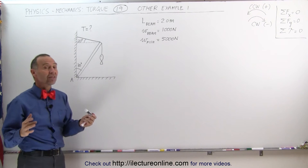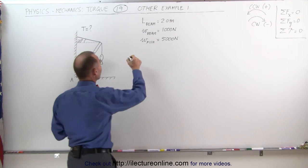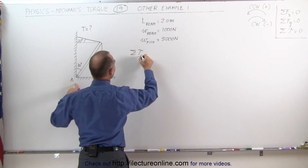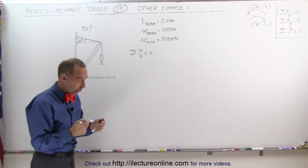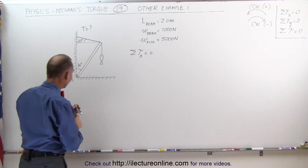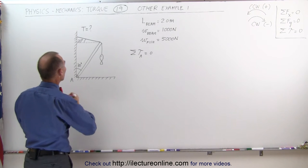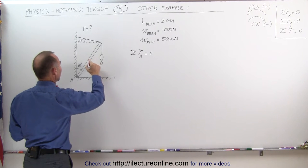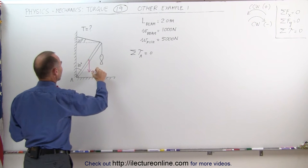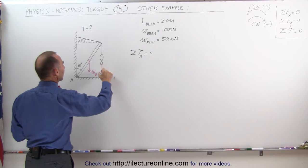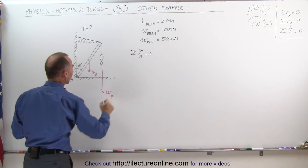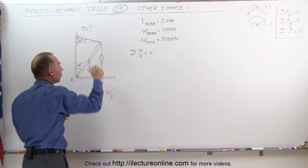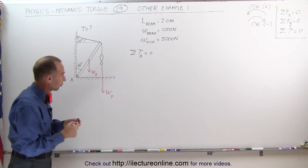Since everything is at equilibrium, we can say that the sum of all the torques about point A must add up to zero. Let's find all the torques contributing to this problem. We have the weight of the beam, which acts at the center of mass at the halfway point pulling down. Then we have the weight of the fish pulling down, and then we have the tension of the cable. Those are the three forces causing the three torques.